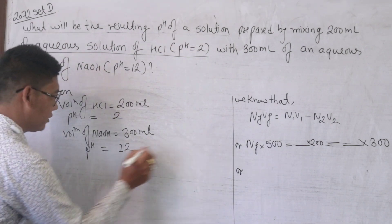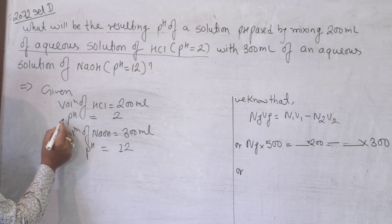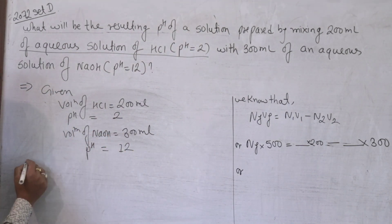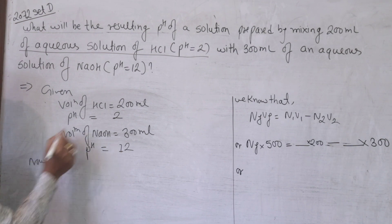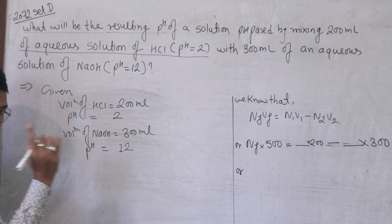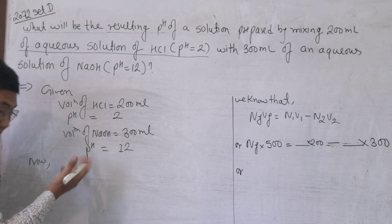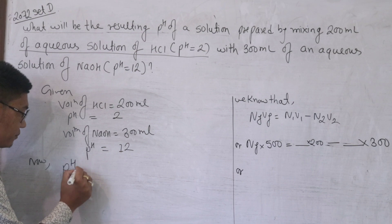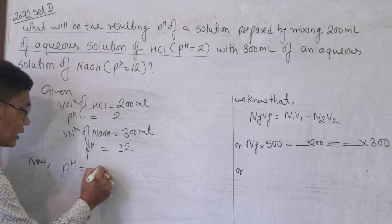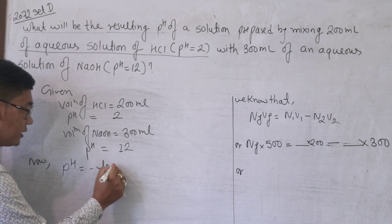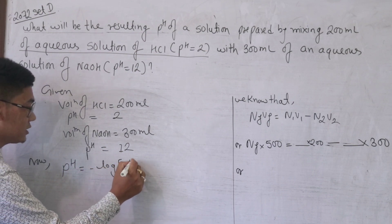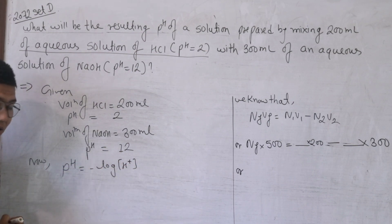Now we have the normality of HCl. Since pH is not directly possible here, let me show you how to do the negative log of H plus concentration.